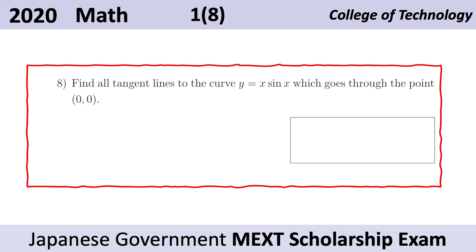We will note that although all these tangent lines go through this point — the origin — the problem does not imply that all the tangent lines we're looking for are tangent at the origin. In other words, the origin is not necessarily the point of tangency. It could just be a regular point of intersection. With that in mind, we know that all lines that go through zero zero have a particular form, and we will exploit that in our solution.